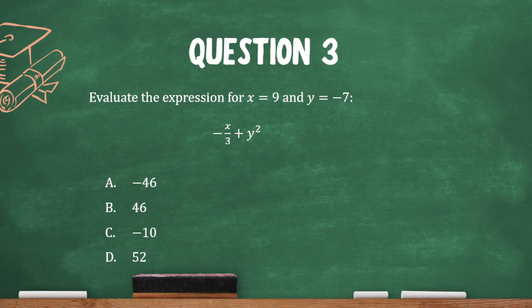Evaluate the expression for x equals 9 and y equals negative 7. Okay, so we have two different substitutions to make here. Let's substitute in the x first. So instead of x, we'll write 9. And we'll write everything else the same. And then plus.